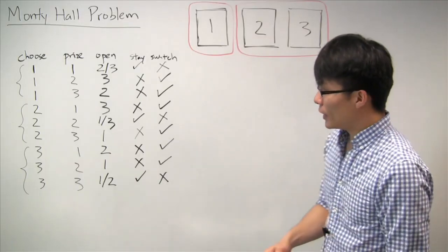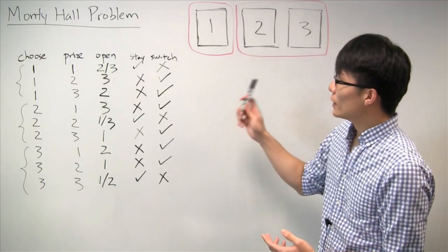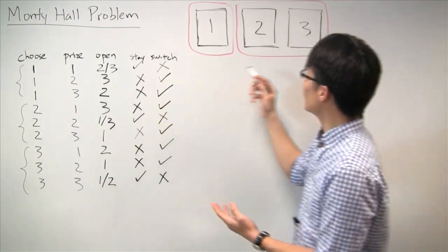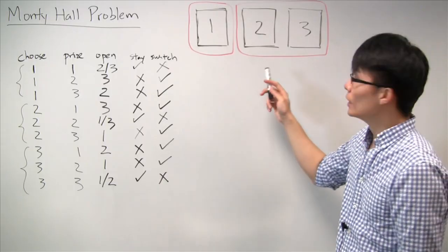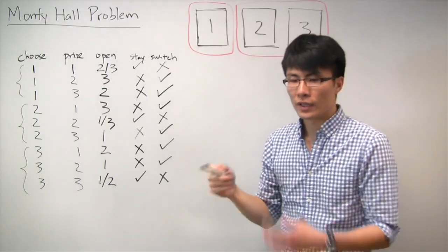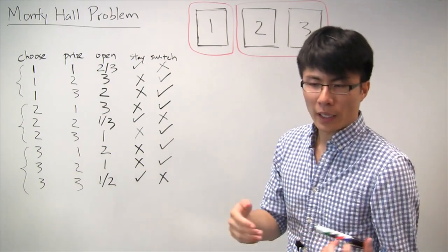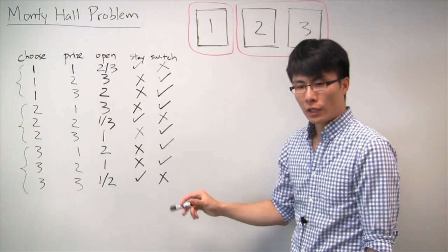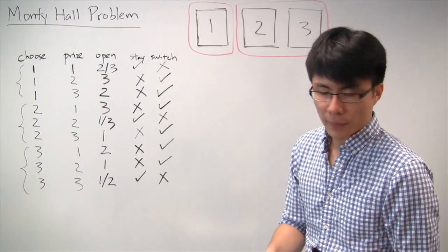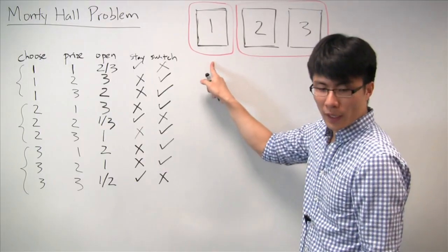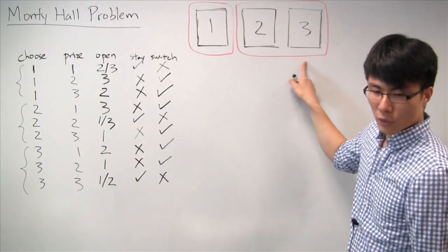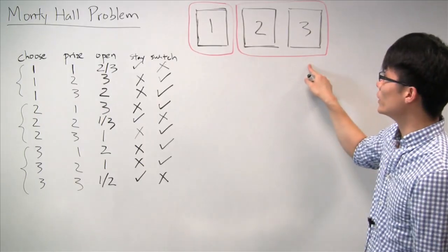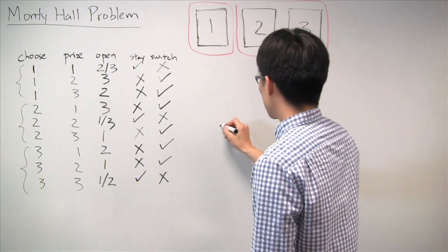What we've really discovered is that the fact that the rules of the game require your friend to open one of the other two doors and cannot reveal the prize plays a big role in this problem — and that is an important assumption. Now let's think about a slightly different variation: a different strategy where instead of always staying or always switching, you choose door 1 first, and then depending on what your friend does, you act accordingly. If your friend opens door 2, you don't switch; if your friend opens door 3, you do switch.